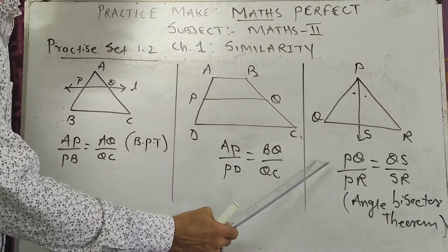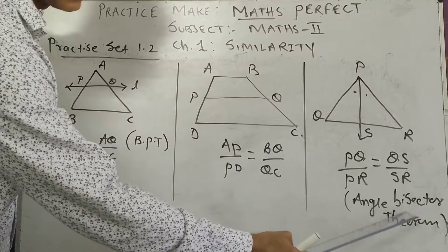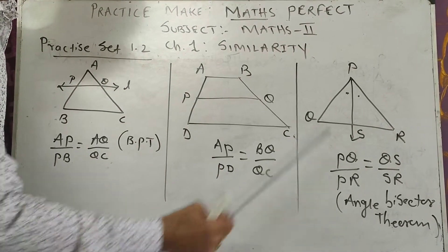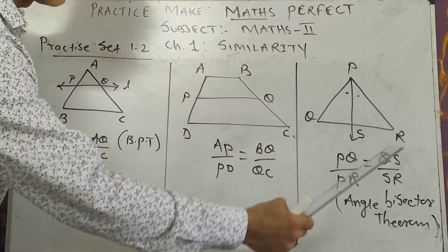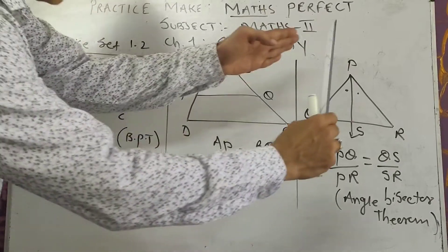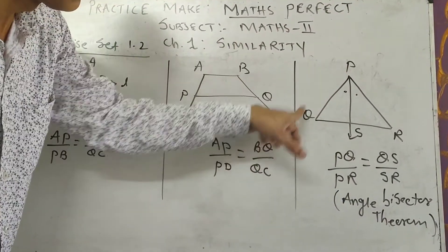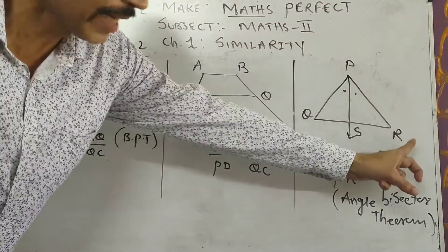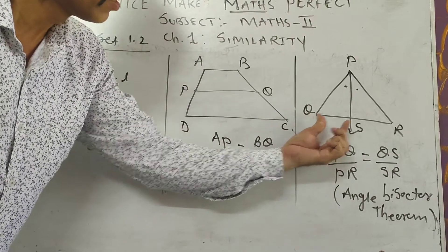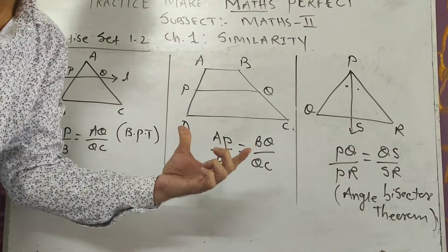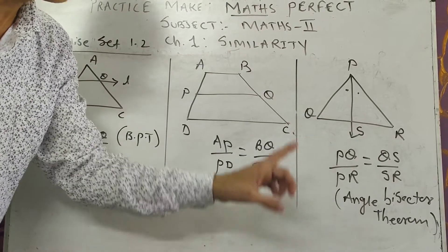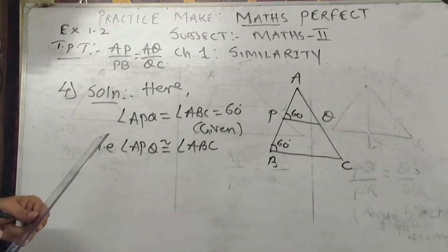Third concept is the angle bisector theorem. A triangle is given and one bisector is given — you can visualize it like a house shape. The ratio is PQ upon PR is equal to QS upon SR. This is the ratio you have to take for the angle bisector theorem.